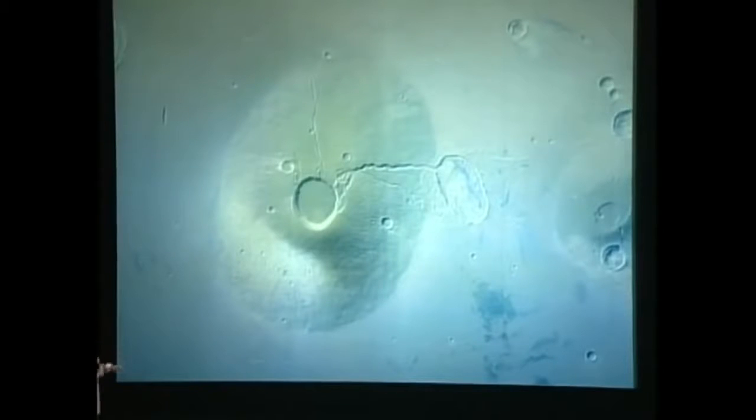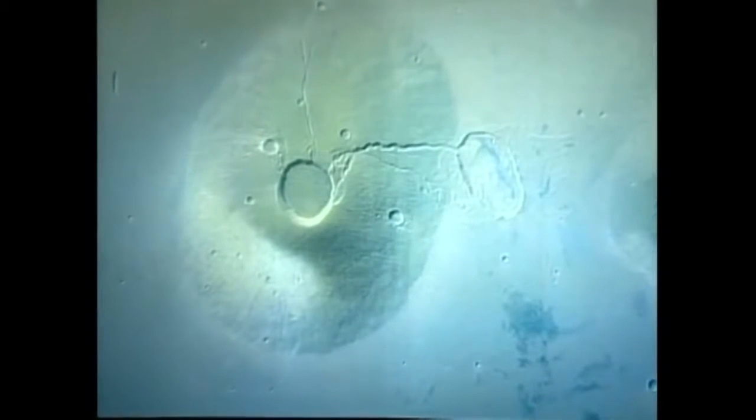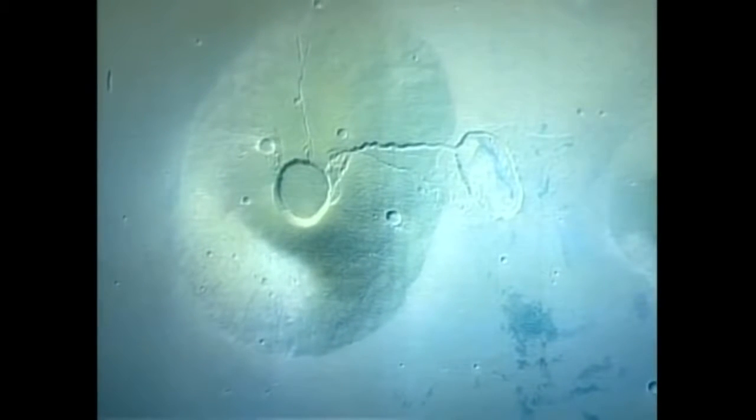One thing is certain. Long suspected but recently confirmed: water, while not on the Martian surface, is beneath the surface and not very far beneath. This is a crater about the size of this stage that was freshly left. If there's water beneath the surface and an asteroid hits, it will lay bare any water.